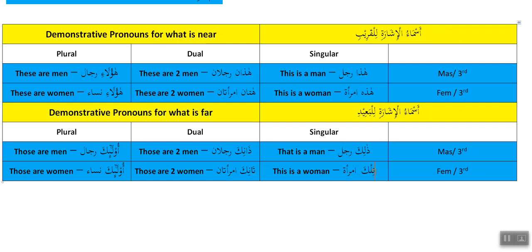For a far female, instead of 'hadhihi imra'atun' — this is a woman — we say 'tilka imra'atun' — that is a woman. And if it's two women we say 'tanika imra'atani.'